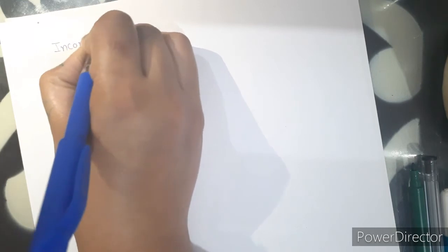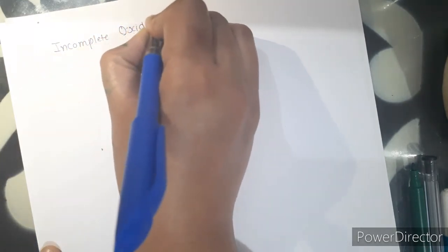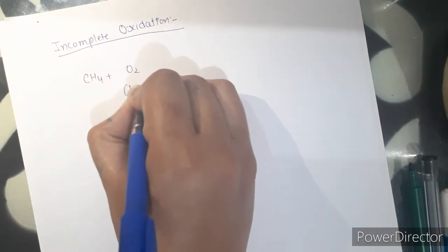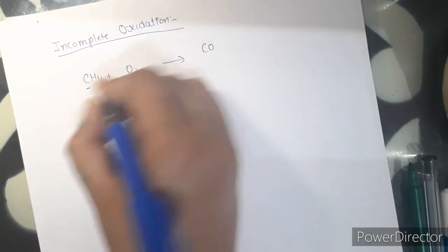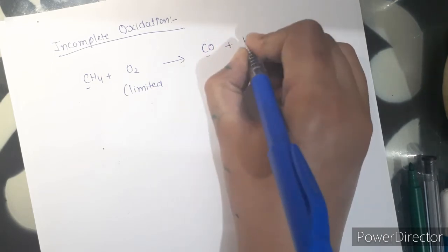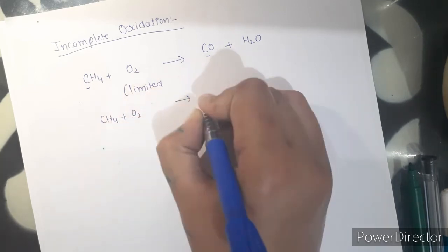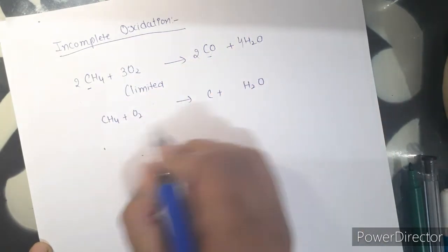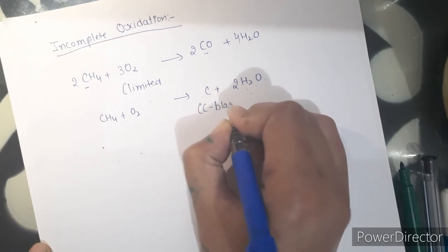Next is incomplete oxidation. If combustion of alkane takes place in a limited supply of air, they give incomplete oxidation. In that case, carbon is not completely burned and is converted into carbon monoxide along with carbon black.